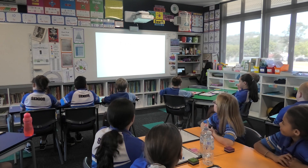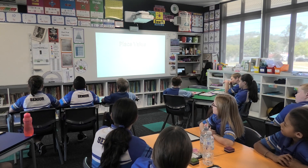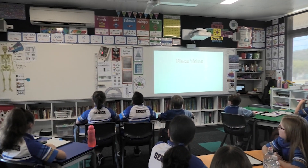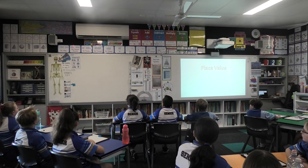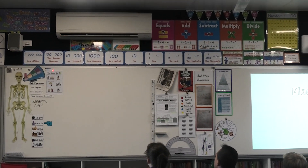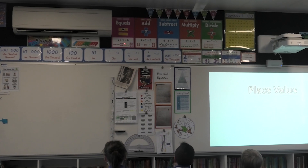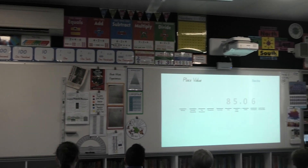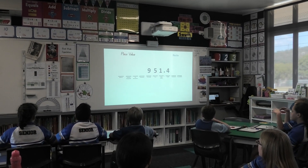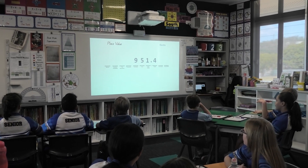Let's look at our place value. Eyes up on the learning. Up here, let's go. 1000, 100, 10, 1000, 100, 1000, 100, 10, 1000, 100, 1000. 560 all together. 85 and 600. All together. 951, 410.